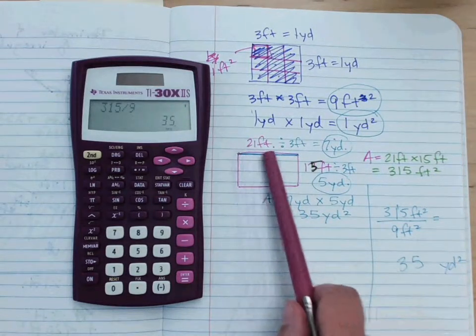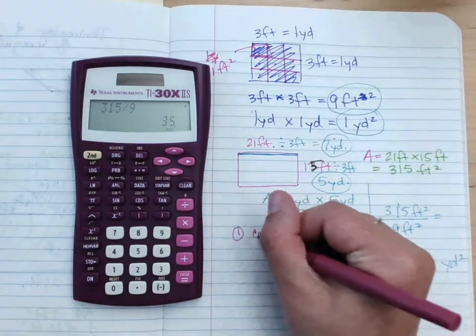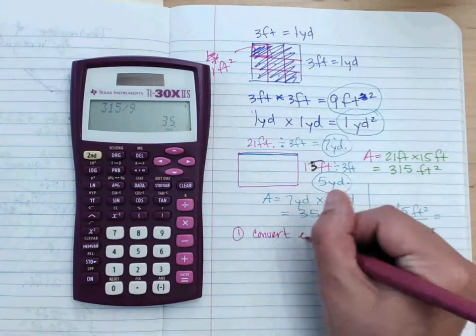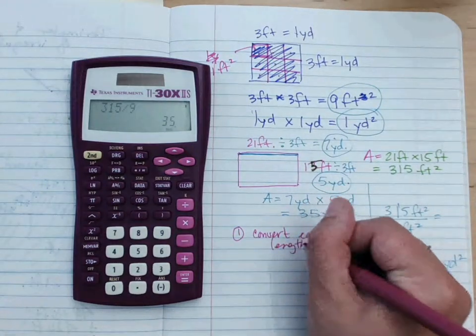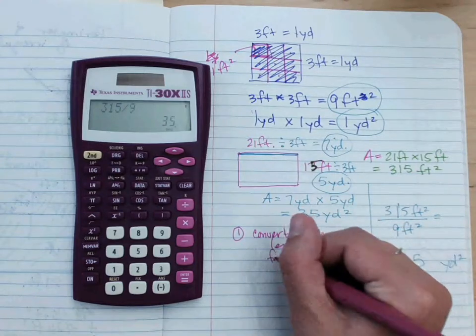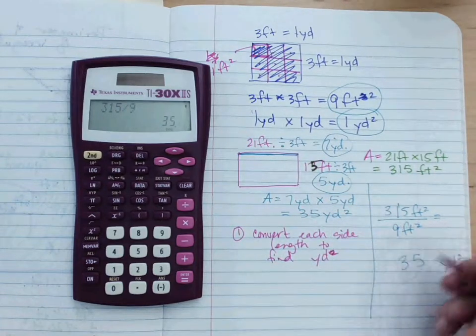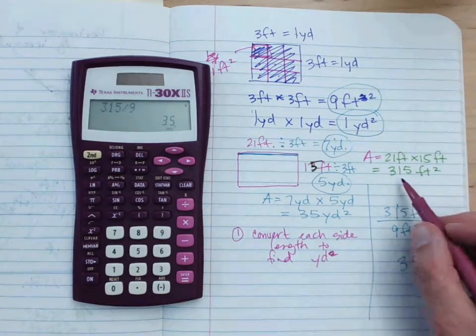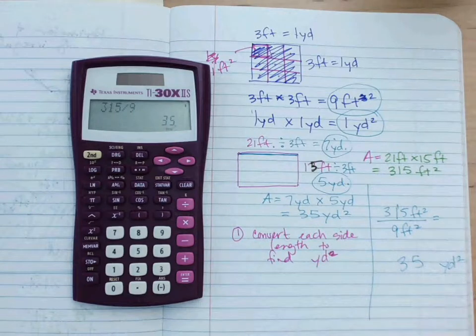So, I just wanted to show you that you can do that either way. You can convert your, you can one, convert each side length to find the yards squared, or yards, right? Or, we can divide our area by nine. We'd have to divide by nine in order to get the right answer, right? So, this is our area in yards squared.